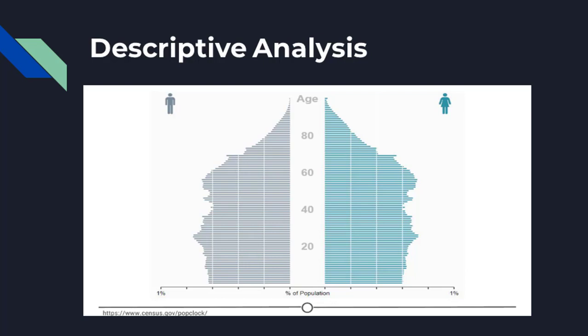Descriptive analysis is aimed at summarizing your sample, not generalizing results to a larger population. Description of data is separate from making interpretations — generalizations require additional statistical steps. An example of purely descriptive analysis is a census, where the government collects measurements on all citizens, which can then be summarized. For instance, showing the age distribution in the US stratified by sex — the goal is just to describe the distribution, with no inferences or predictions about future trends.